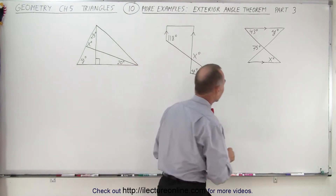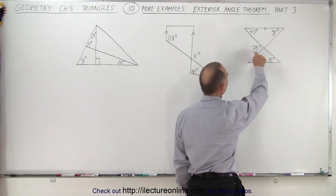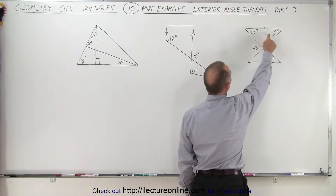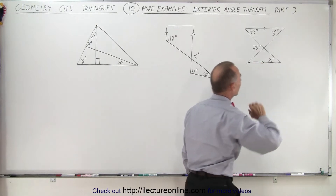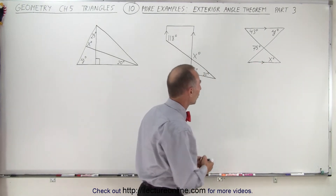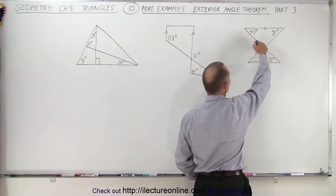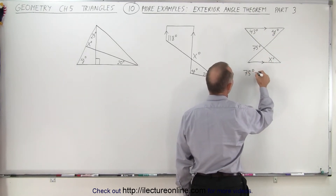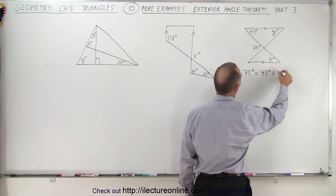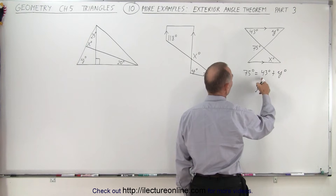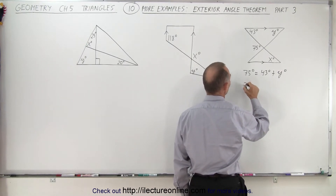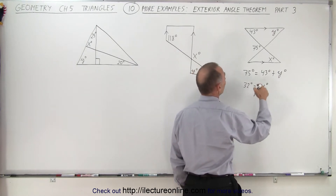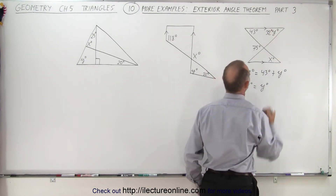Let's go to our first example. Notice that this angle here is an exterior angle, and we know that it must be equal to the sum of the two angles inside the triangle that are not adjacent to that angle. Using the exterior angle theorem: 75 degrees equals 43 degrees plus y degrees. Subtracting 43 from both sides, we get y equals 32 degrees.